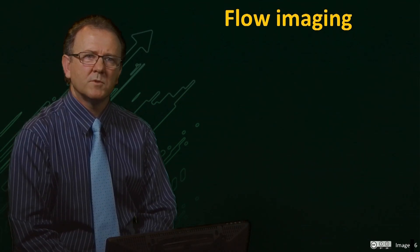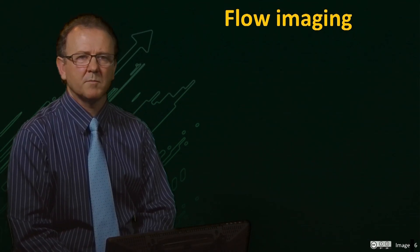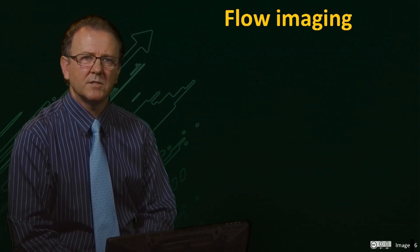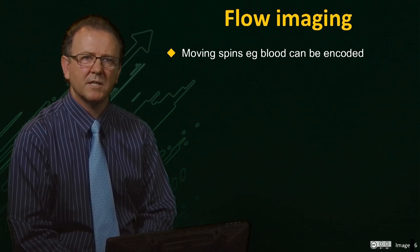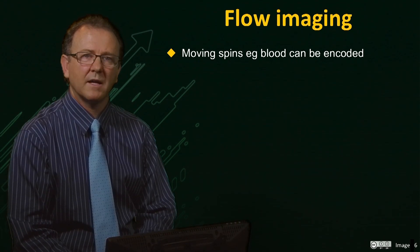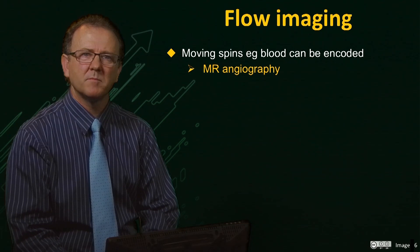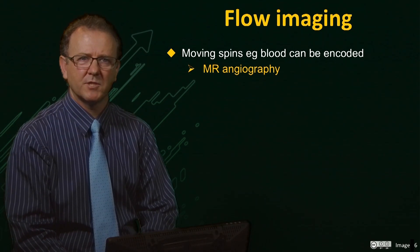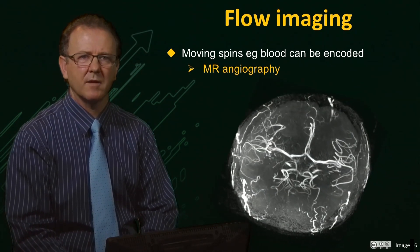It is also possible to encode moving spins to measure flow, for example in blood. In MR angiography, the signal from moving spins in blood is enhanced by saturating spins in a slab of tissue and observing the stronger signal of unsaturated spins that flow into the slab. A maximum intensity projection of the image then produces a magnetic resonance angiogram.